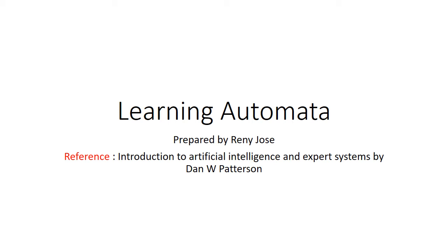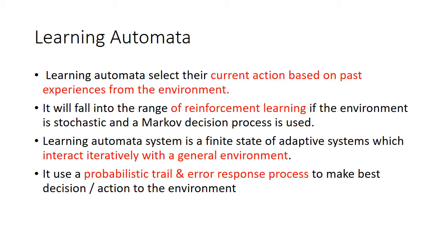Welcome to the presentation on Learning Automata. The theory of learning automata was first introduced in the year 1961. It is a type of machine learning algorithm. It selects the current action based on past experience from the environment, and will fall into the range of reinforcement learning if the environment is stochastic and a macro decision process is used.